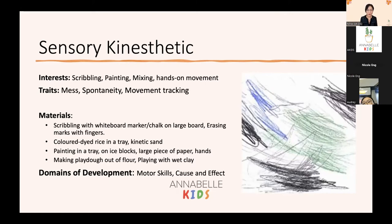Children's interest at this stage manifests through scribbling, painting, mixing, and a lot of hands-on movements. Visual traits of their artwork mostly reflect mass, spontaneous movement, and mark tracking. Materials used for the sensory kinesthetic level include scribbling with whiteboard markers, chalk on a large board, erasing marks with fingers, colored dyed rice in a tray, kinetic sand, wet paint on a tray, ice blocks with food colors, large pieces of paper, making play-doh out of flour, and playing with wet clay. In terms of domains of development, children are learning a lot about motor skills and cause and effect — when I move my body, there is an effect that I see through the marks I'm making.